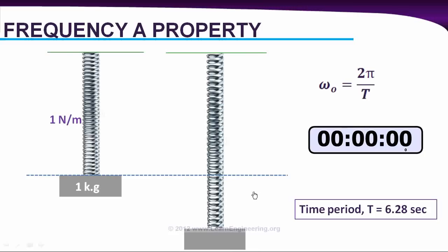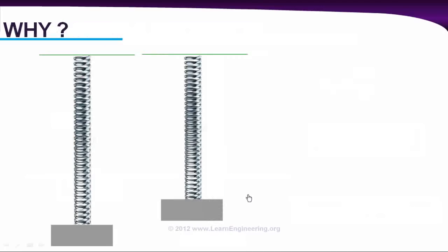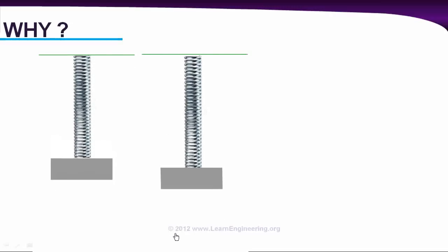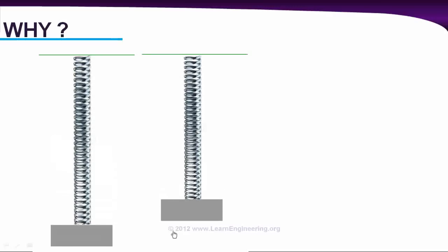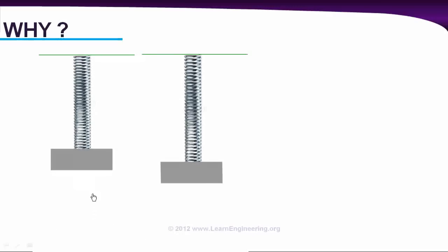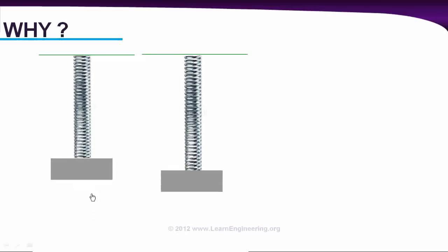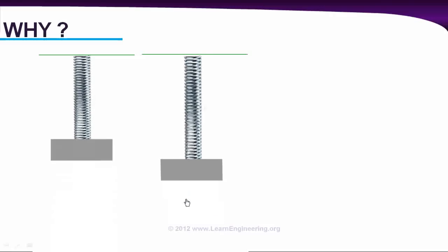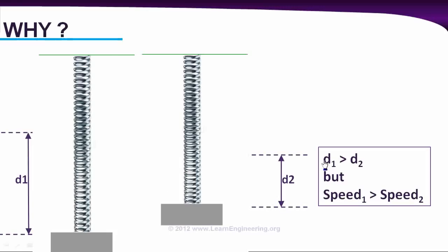Why does the time period remain the same for both cases? To find the answer, we'll do both experiments simultaneously. Here, both masses are going up with different amplitudes, and the time period is the same. You can see the first spring-mass system travels more distance, but at the same time, it travels at a higher speed compared to the second case. That's the reason. Even if the distance traveled is more, it has higher average speed, so both effects get negated and the time period or frequency remains the same.